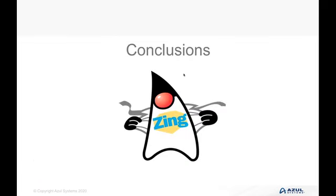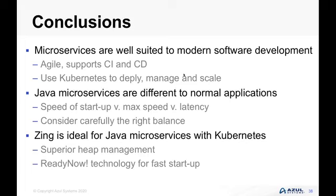To conclude: microservices are well suited to modern software development — agile, continuous integration, continuous deployment. We use Kubernetes to manage and scale our applications, which is the magic that happens above the container. When we look at Java microservices, they are different to normal applications, so we need to consider the speed of startup, the maximum speed, and the latency — three quite distinct performance considerations. When looking at the overall design of your microservices architecture you need to get that balance right. Zing is ideal for Java microservices with Kubernetes, with superior heap management through C4 and both Falcon and ReadyNow technology for fast startup and better overall performance within the container.